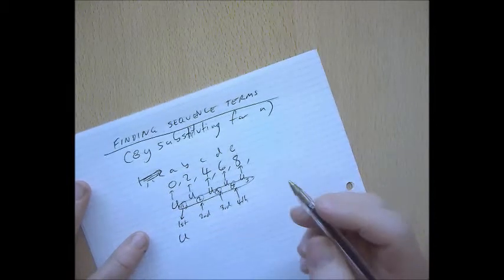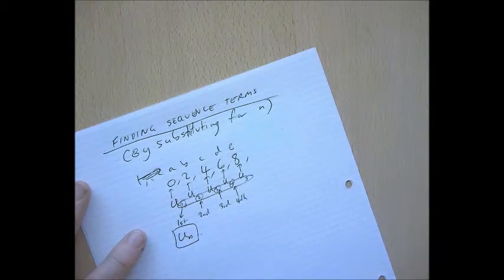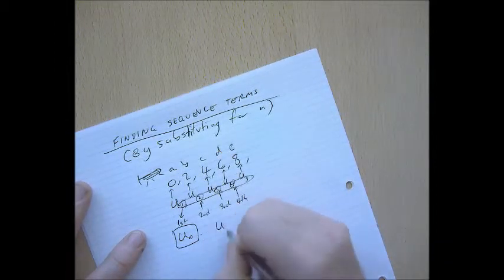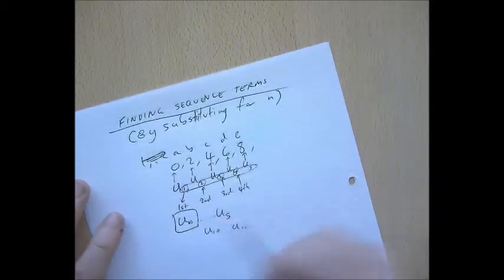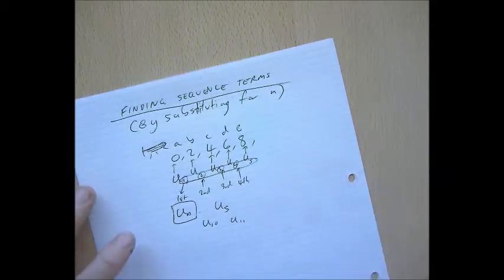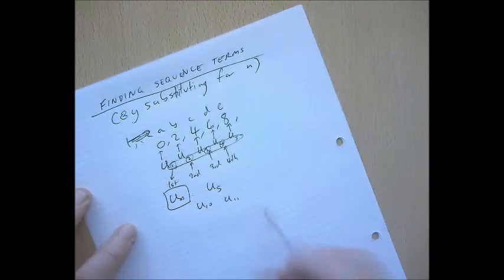And that n could be anything. It could be 5, it could be 10, it could be 11. Remember, the whole point of algebra is to talk about all possible numbers at the same time without having to specify which one you're talking about. Now, what does that lead to?